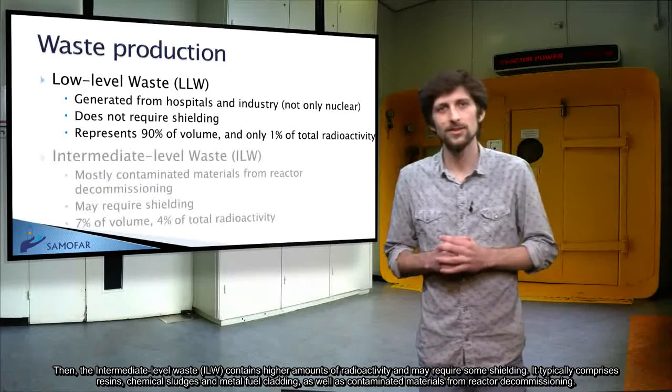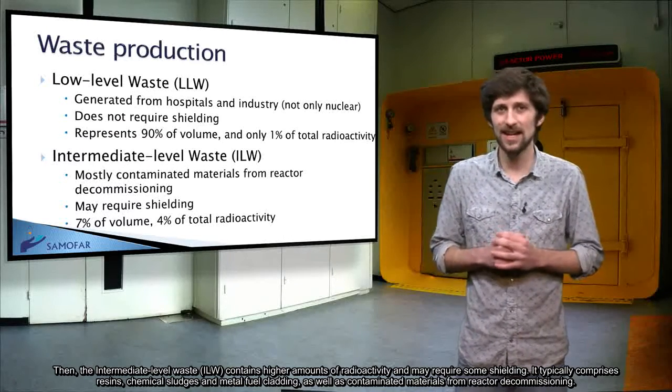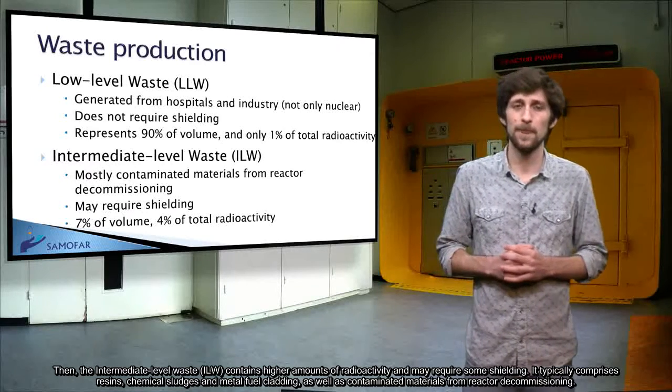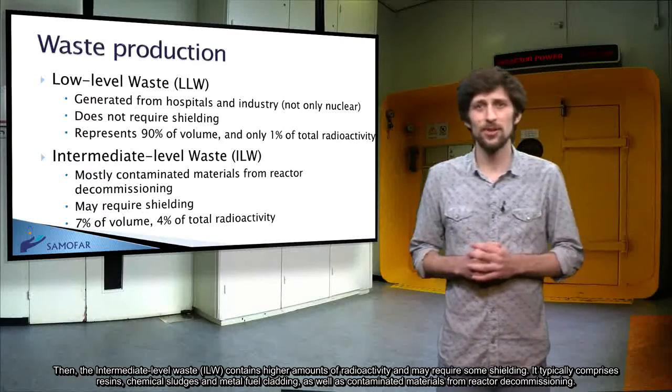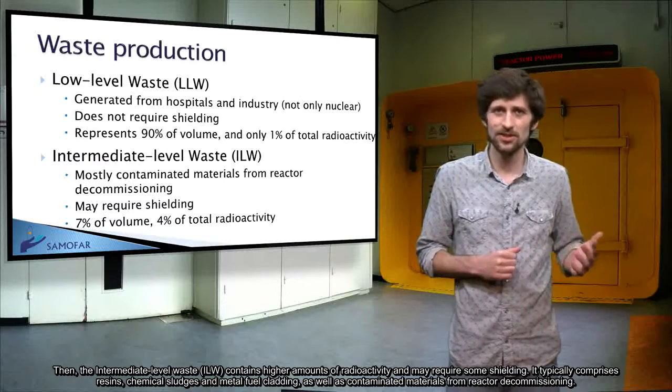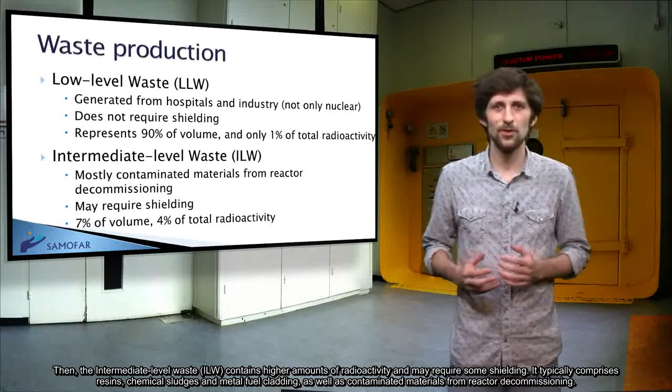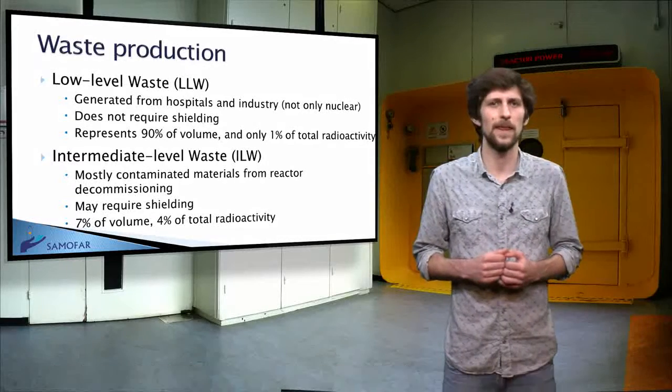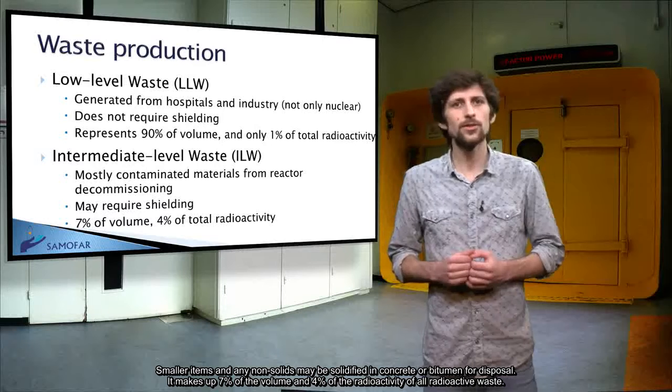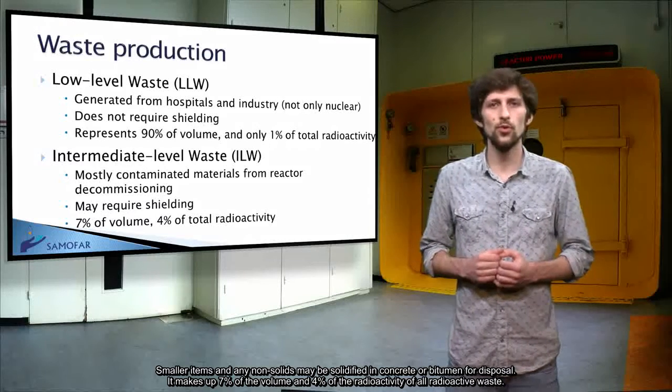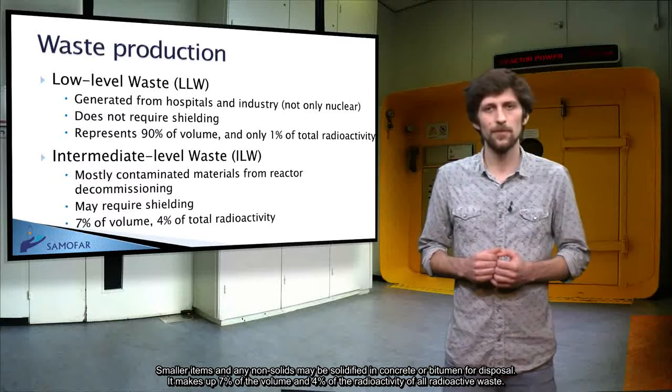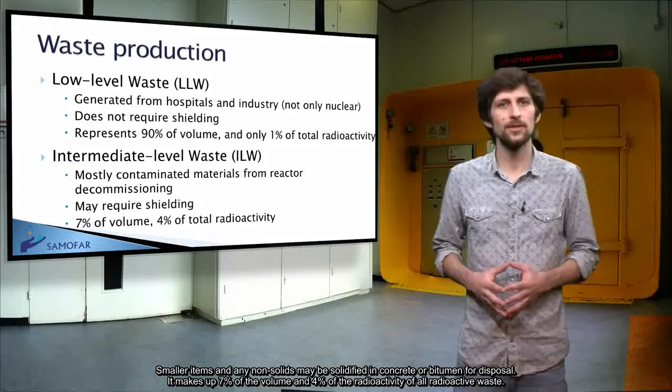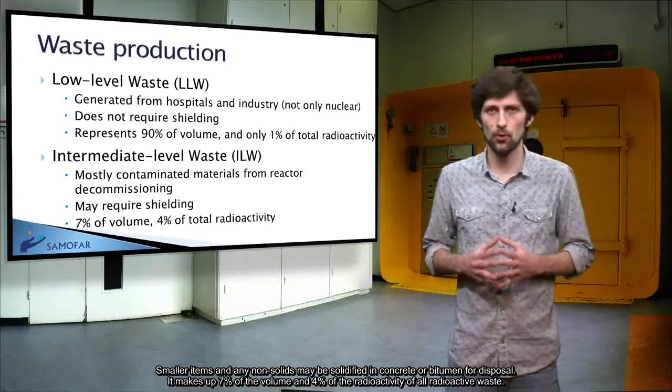Then, the intermediate level waste, which contains higher amounts of radioactivity and may require some shielding. It typically comprises resins, chemical sludges and metal fuel cladding, as well as contaminated materials from reactor decommissioning. Smaller items and any non-solids may be solidified in concrete or bitumen for disposal. It makes up 7% of the volume and 4% of the radioactivity of all radioactive waste.